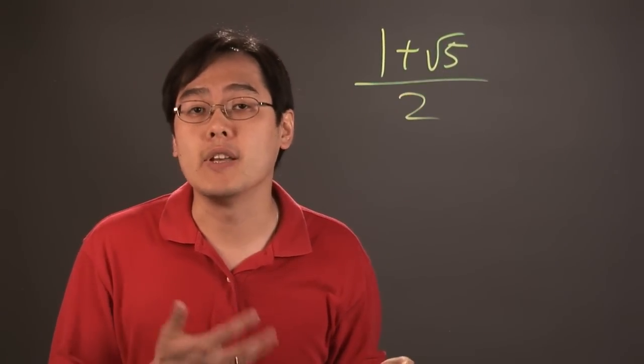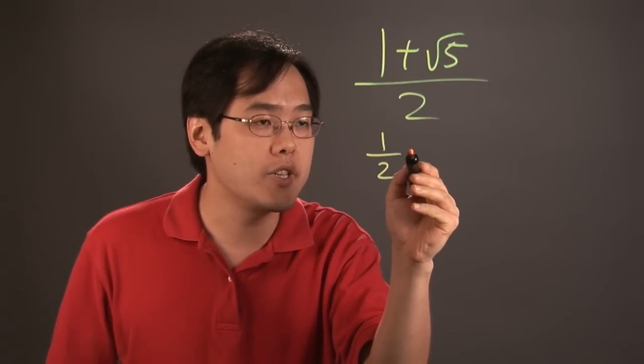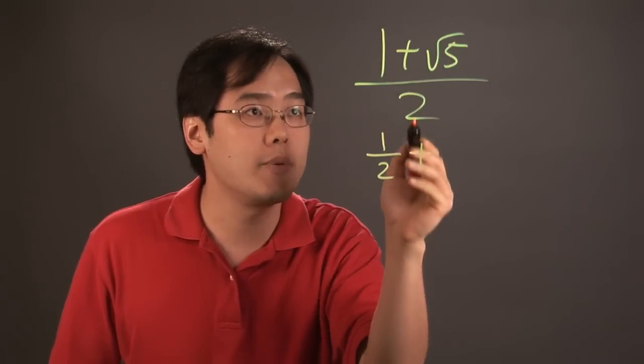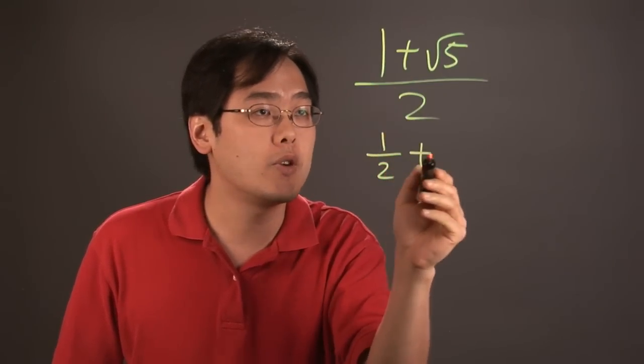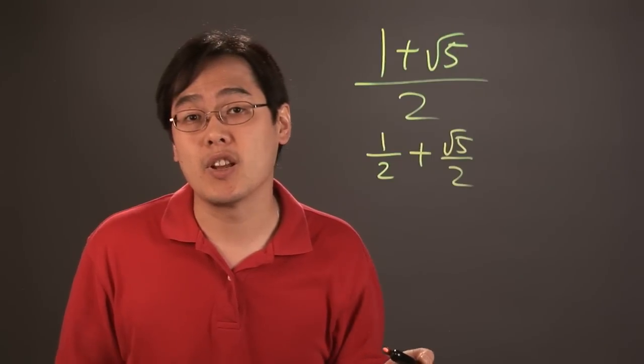Now this in and of itself is an irrational number, like I said before, but the best thing to do if you do want to simplify it some more is we can break it up as two separate terms. This would be 1 over 2 plus square root of 5 over 2, but that's really the best thing that you can come up with.